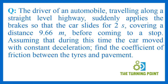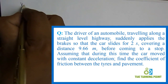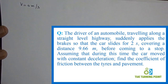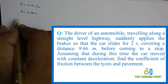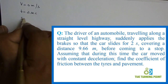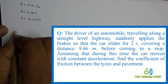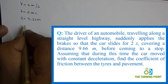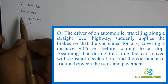The driver of an automobile traveling along a straight level highway suddenly applies the brakes, so the final velocity is going to be 0 meters per second. The car slides for 2 seconds, covering a distance of 9.66 meters before coming to a stop. Assuming constant deceleration, find the coefficient of friction between the tires and pavement. So we need to calculate the value of mu.